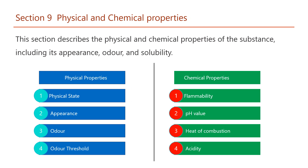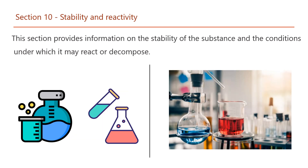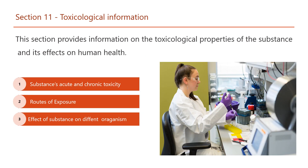Section 9 – Physical and Chemical Properties: This section describes the physical and chemical properties of the substance, including its appearance, odor, and solubility. Section 10 – Stability and Reactivity: This section provides information on the stability of the substance and the conditions under which it may react or decompose.